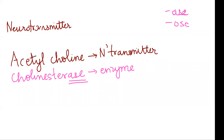Everyone knows that a word ending with '-ose' is glucose — glucose, fructose, sucrose. What are all these? These are all carbohydrates. So words ending with '-ose' generally mean carbohydrate.